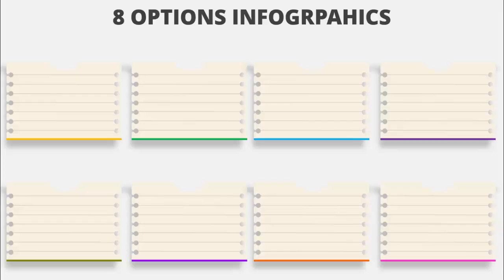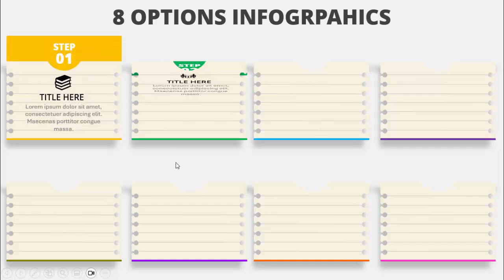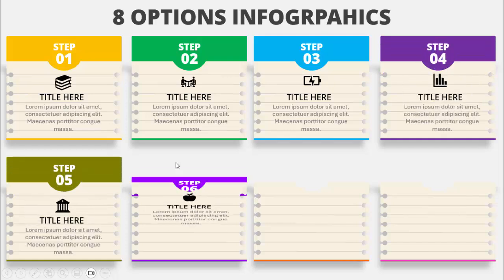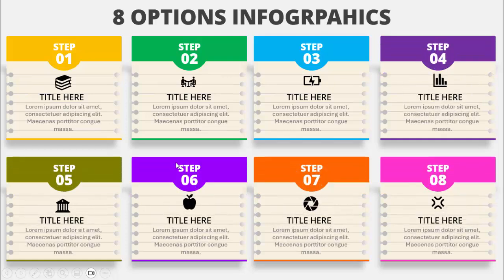In today's tutorial I'm going to show you how to create an eight-options infographic slide design in PowerPoint. I have created a kind of paper with holes on both sides and a shadow. You can see different color combinations here, and when I click it will show option one along with the detailed text — step one through step eight.